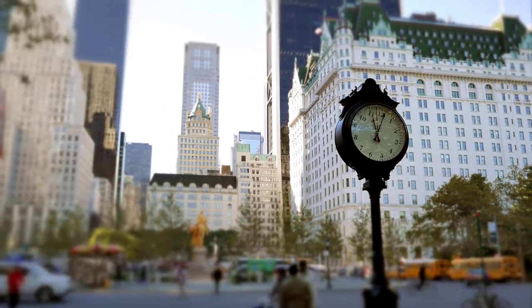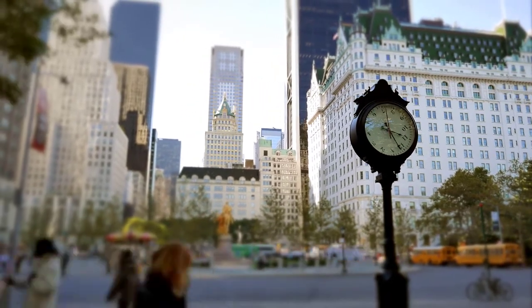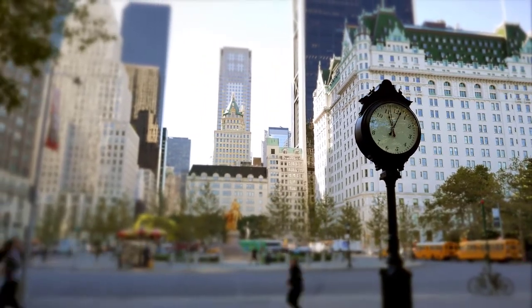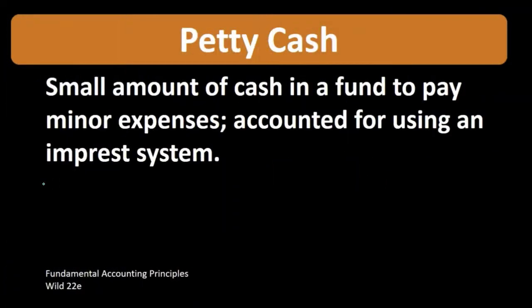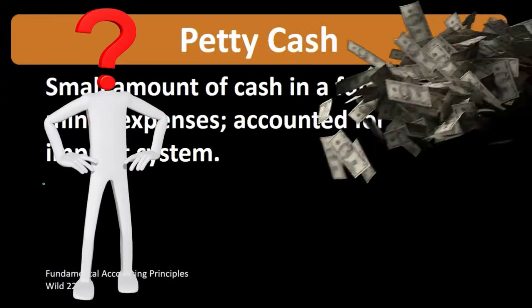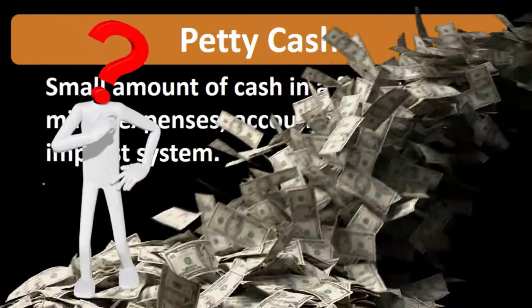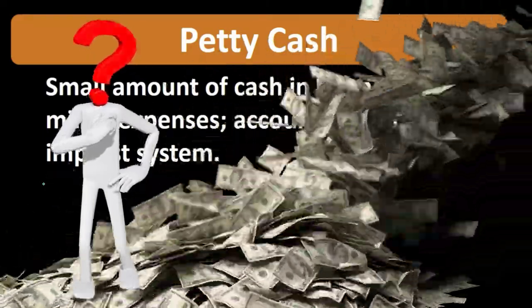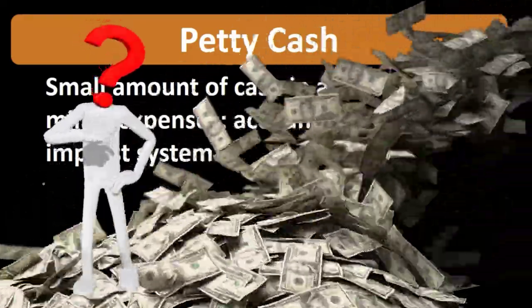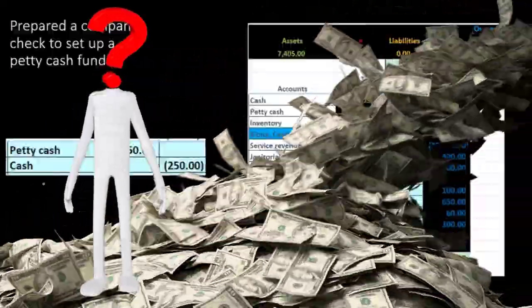Therefore, we're going to have a system where we have a set amount — that's the idea of this imprest amount. We're going to say this is the set amount we want, and then we're always going to basically replenish the petty cash to get it back to whatever that set amount we decide on is.